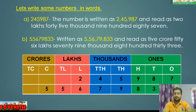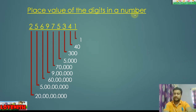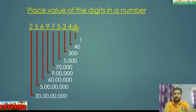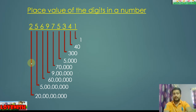Let us take one more example to find the place value of each digit. One is on the ones place — value one. Four is on the tens place — value forty. Three is on the hundreds place. Going further: ones, tens, hundreds, thousands, ten thousands, lakhs, ten lakhs, crores, ten crores. Nine is on the lakh place — value nine lakh. Five is on the crore place — value five crore. Two is on the ten crore place — value twenty crore.